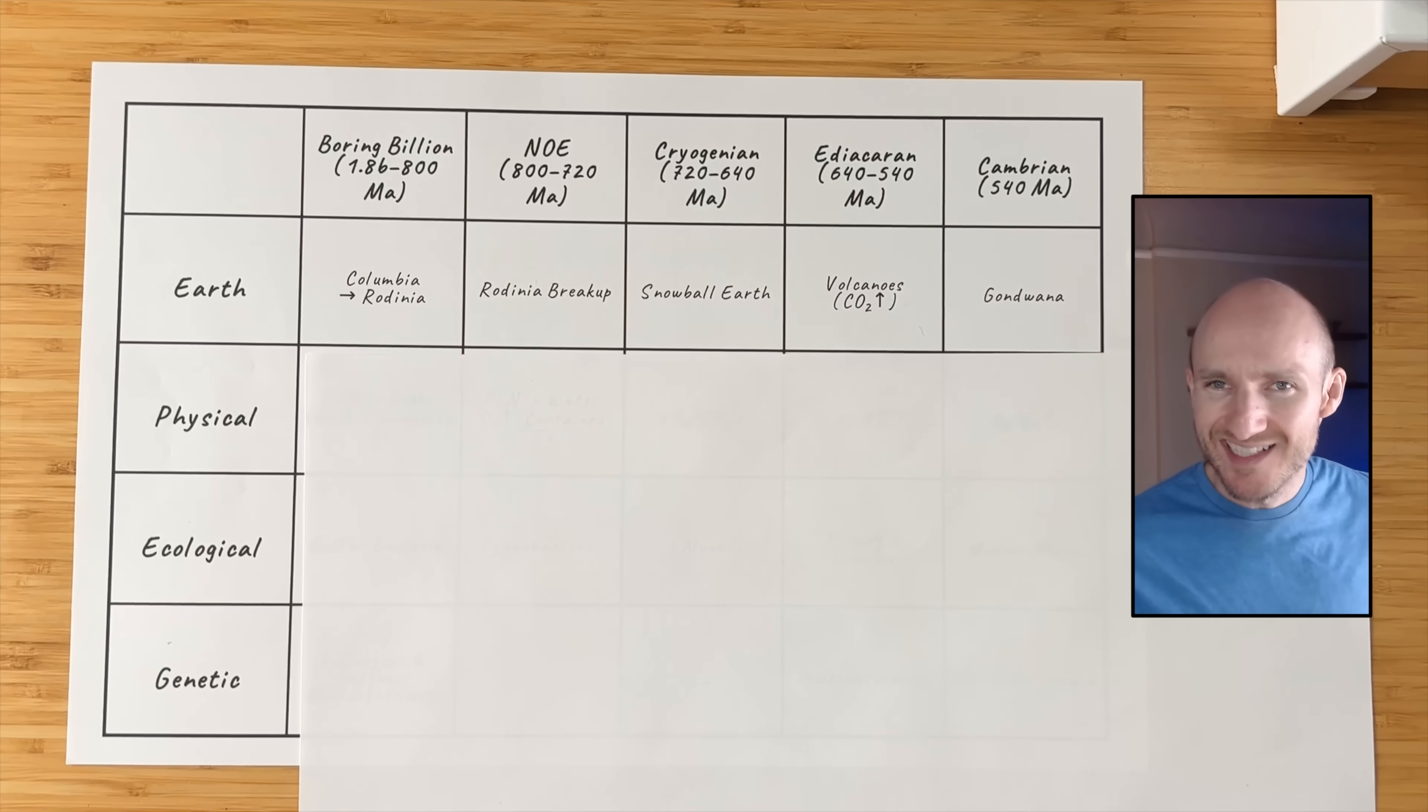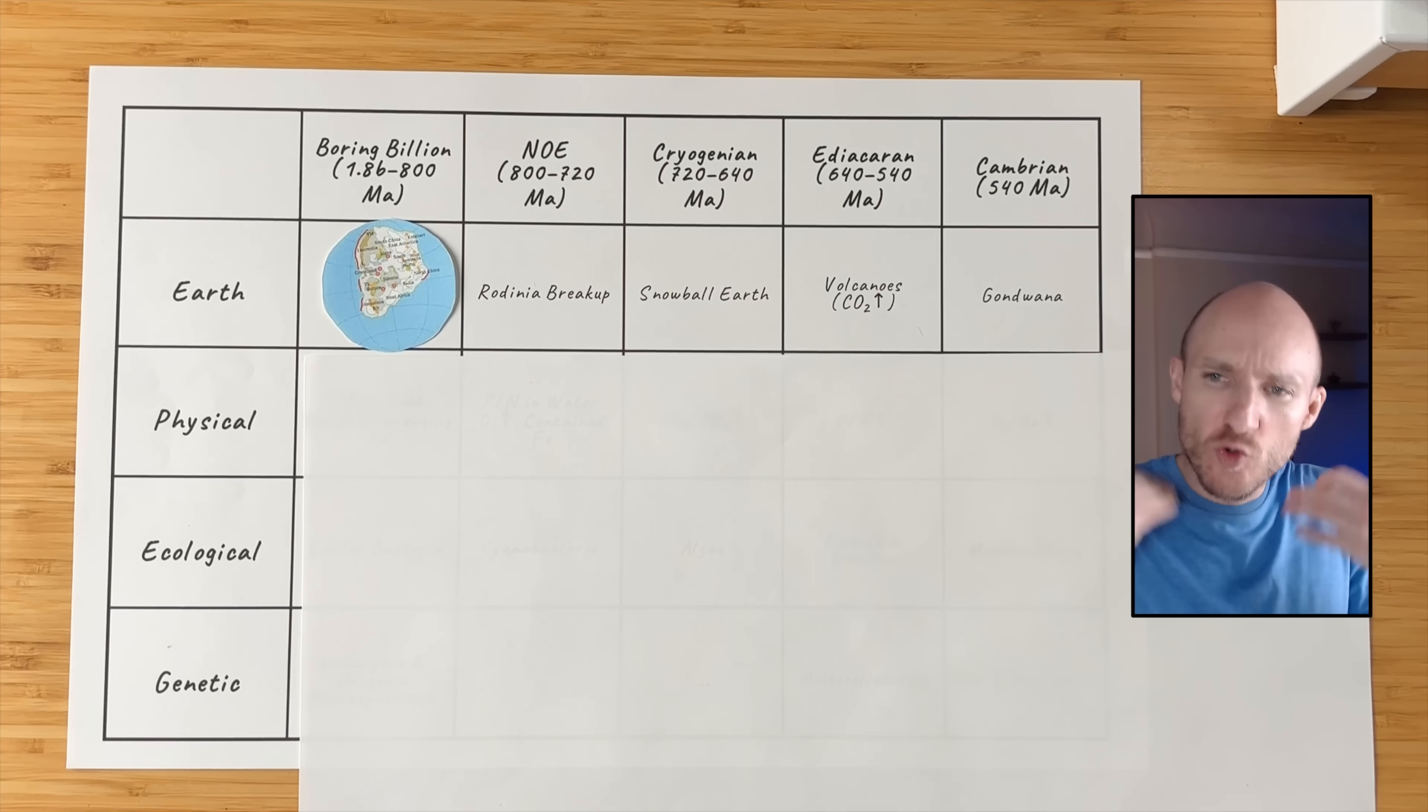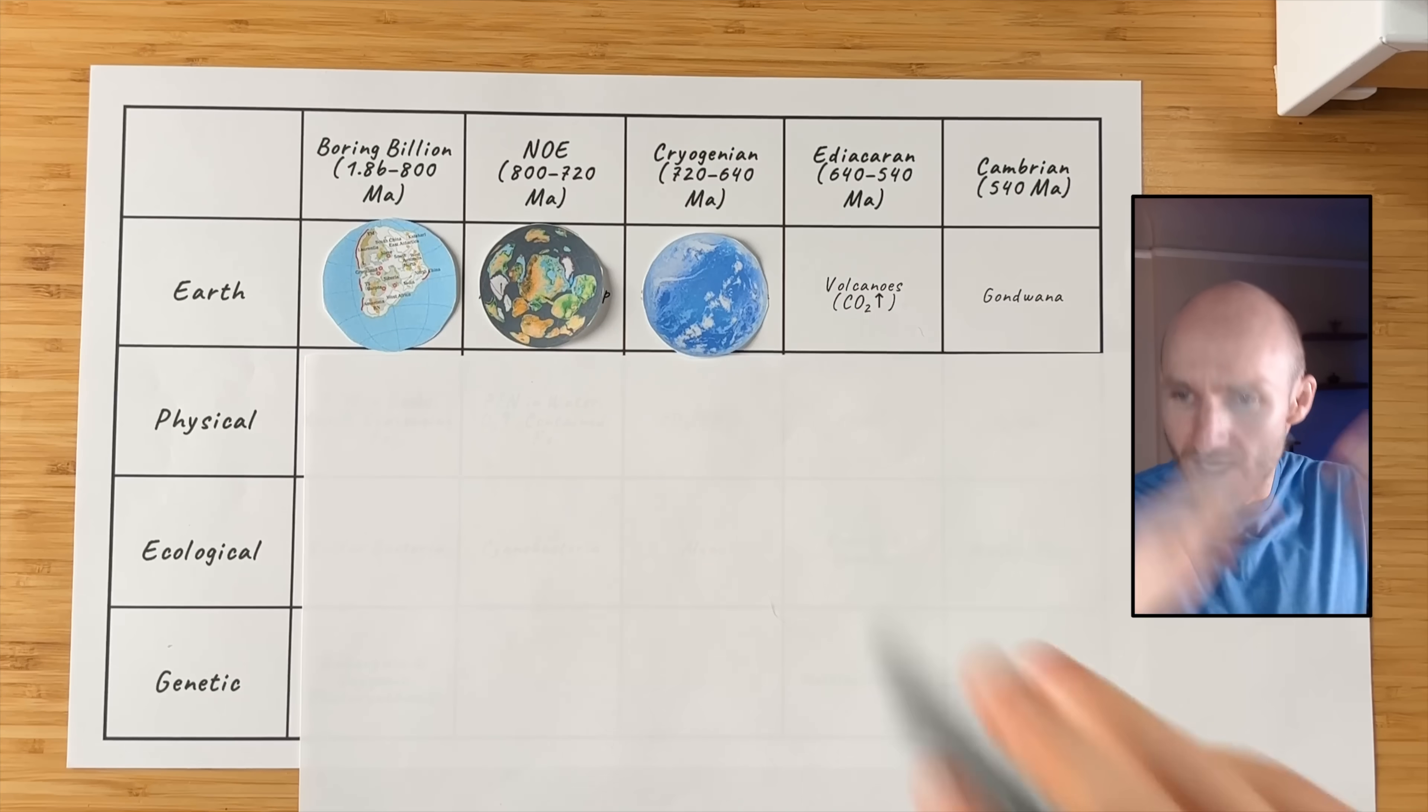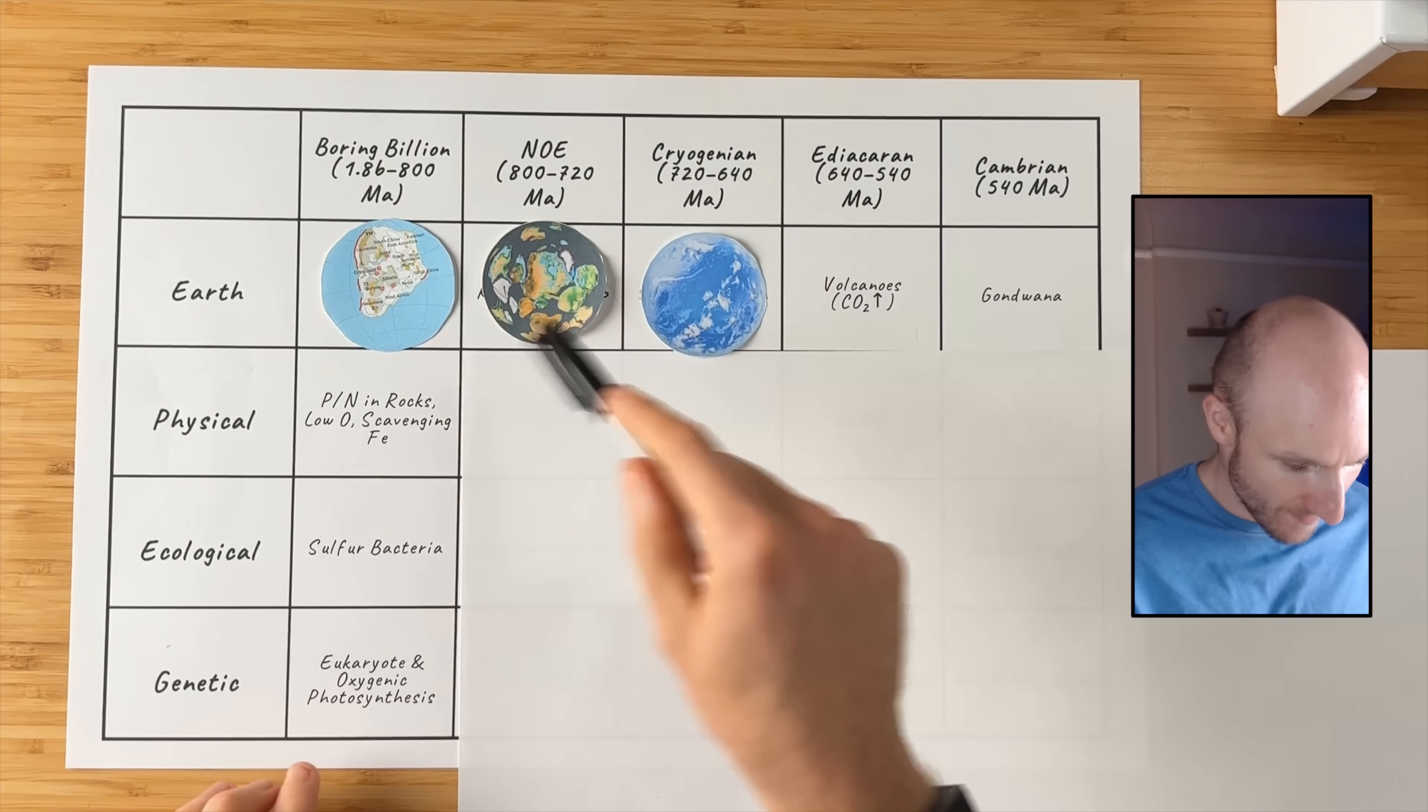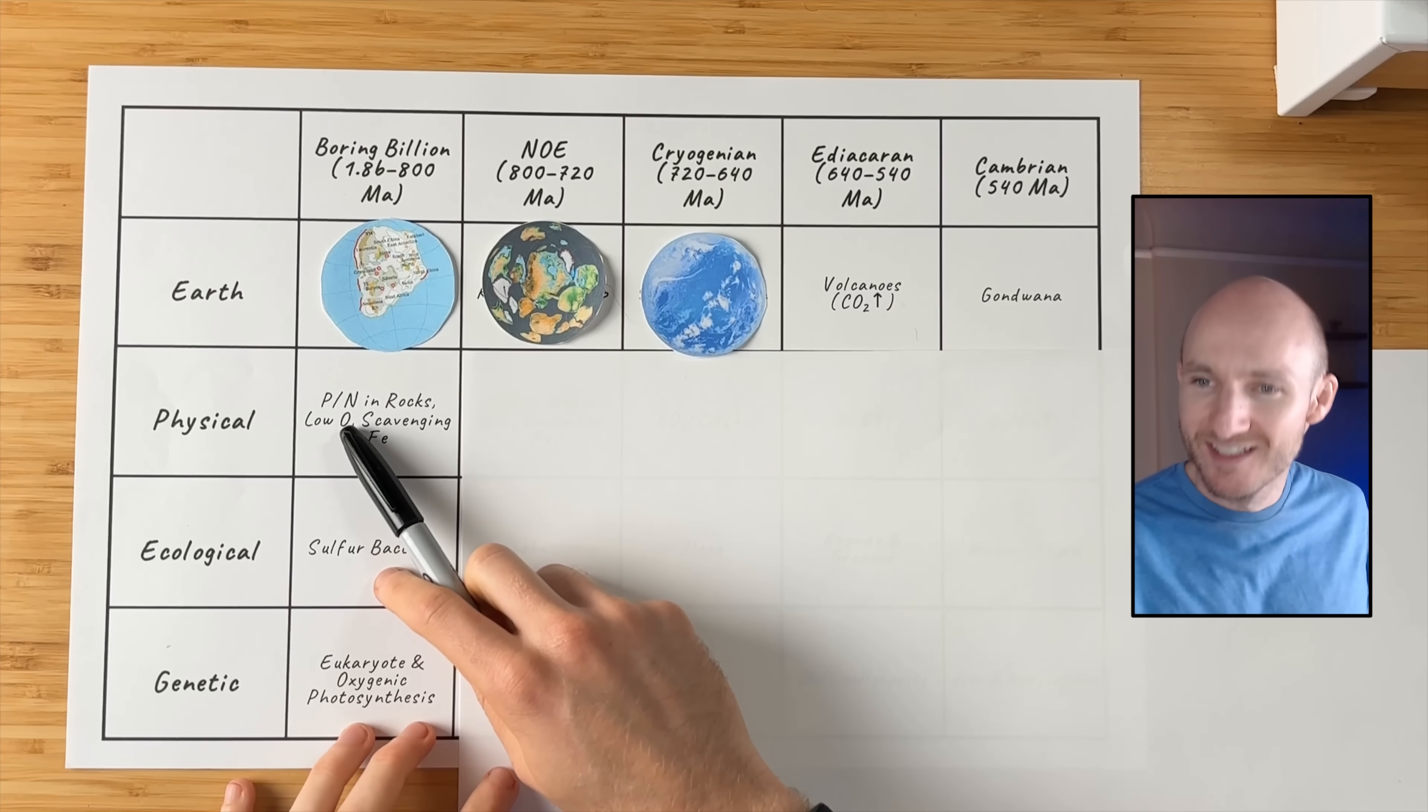Okay. So what did the Earth look like over time? Well, the issue in the boring billion is that the Earth was also boring during that time. And so you had this Columbia supercontinent, the Rodinia supercontinent, they were just kind of hanging out. They weren't breaking up. And then after they kind of started to cool down and you were able to have actual plate tectonics and subduction, then Rodinia as a supercontinent, it was able to break up.